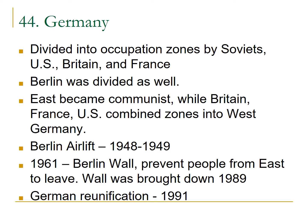Germany was divided into occupation zones by the Soviets, the US, Britain, and France. The East became communist while the Western zones combined into Western Germany. The Berlin Airlift was the first test of the US containment policy when the Soviets tried to take over West Berlin — they were not successful. This eventually resulted in the building of the Berlin Wall in 1961 by the Soviets to prevent people from Eastern Germany leaving to freedom in Western Germany. The Berlin Wall was brought down in 1989 with the fall of communism, and German reunification happened officially in 1991.